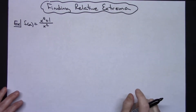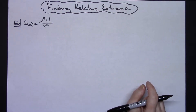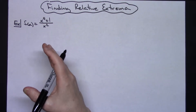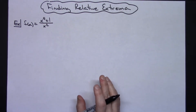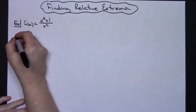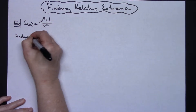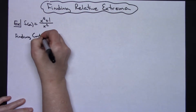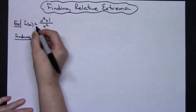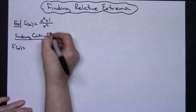In this video I'm going to be taking a look at finding some relative extrema for a function. This one's got a particular feature that I want to address, which is why I chose it. Let's start by finding the critical numbers. We find critical numbers by taking the derivative of the function, so we're going to find f prime of x and we're going to use the quotient rule on this one.